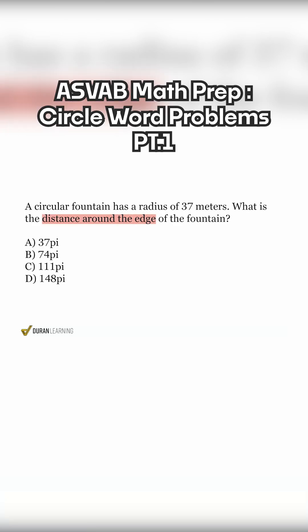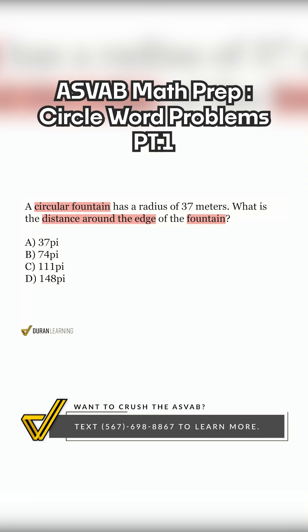But given that we're dealing with a circle, a circular fountain, this is going to be circumference. And so instantly we want to think about what formula we should use because there are two. The first being circumference equals 2 pi r, where r is the radius. Or we could be using circumference equals pi multiplied by the diameter.